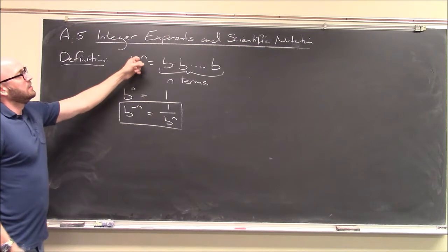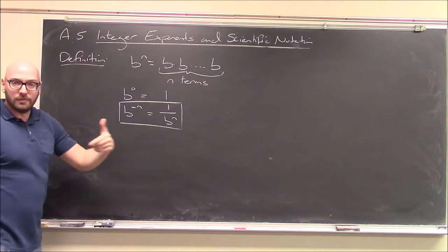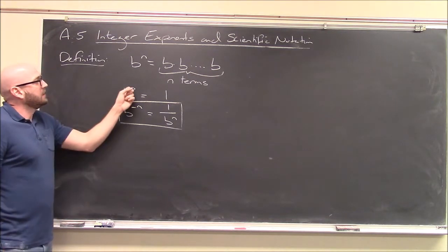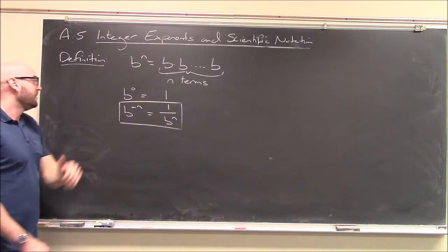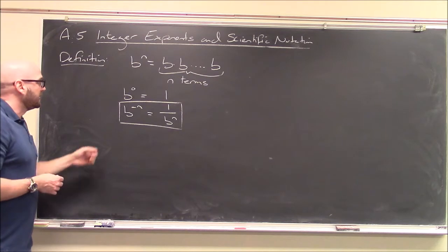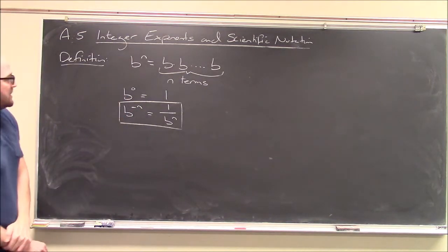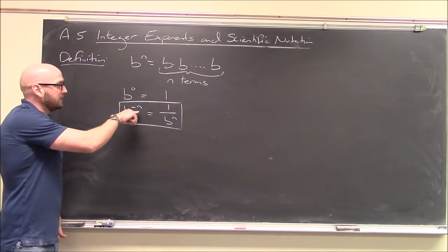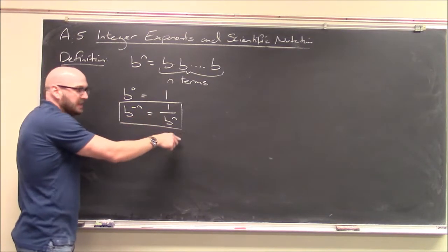Except that definition only works for natural numbers, right? So where n is 1, 2, 3, 4, 5, all the counting numbers. So we made this definition, let's expand this a little bit. Let's define b to the 0 to just be 1. What about the integers? What about negative whole numbers? So things like b to the minus 5, b to the minus 12. And here's our definition. We're going to define this, and now we can handle negative exponents, as b to the minus n is 1 over b to the n.